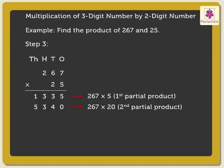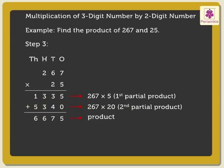Step 3: Now add both the partial products obtained, that is, 1,335 plus 5,340, to get the answer, which is equal to 6,675.